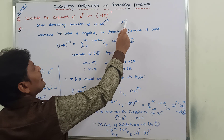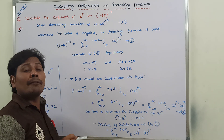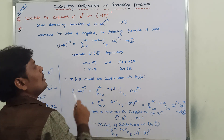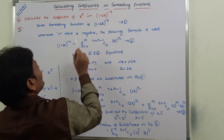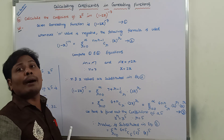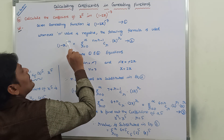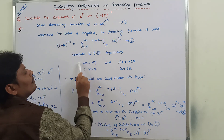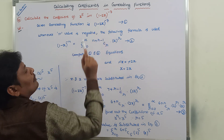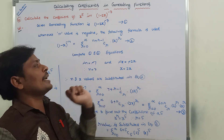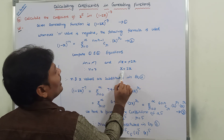Now comparing the given equation with (1 minus x) whole power minus n, we get: minus n is equal to minus 7, so n is equal to 7. Also, minus x is equal to minus 2x, so x is replaced by 2x.